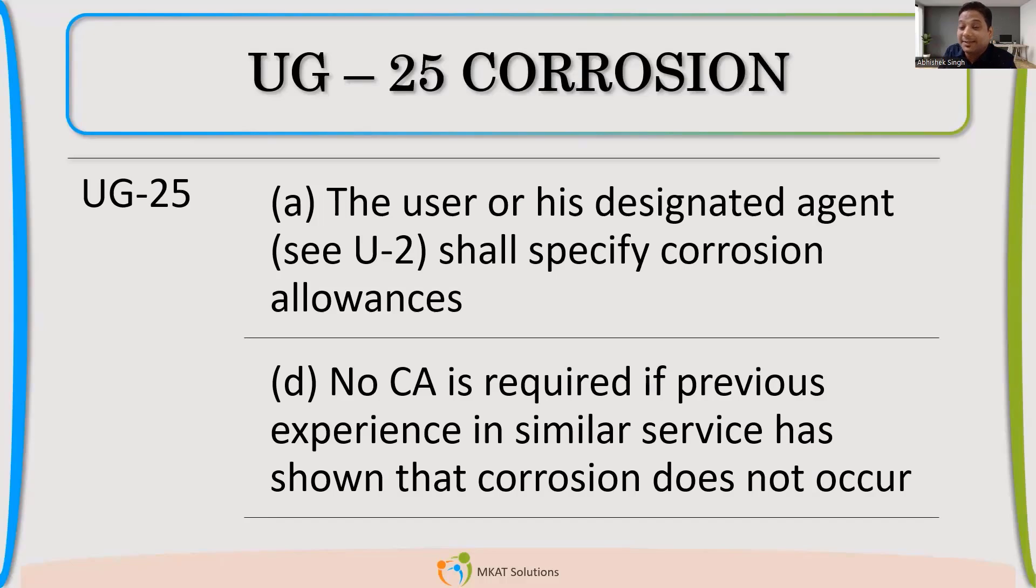So you can see here also, the user or process engineer who is a kind of designated agent who has been designated the role of client. So either the client, which is actually maybe the user, or his designated agent who has assigned somebody to find out that - those are the people who are responsible to provide Corrosion Alliance to us as a mechanical engineer. So when the design has come to us, the Corrosion Alliance should be given. It's not our duty to find the Corrosion Alliance. You should understand it.